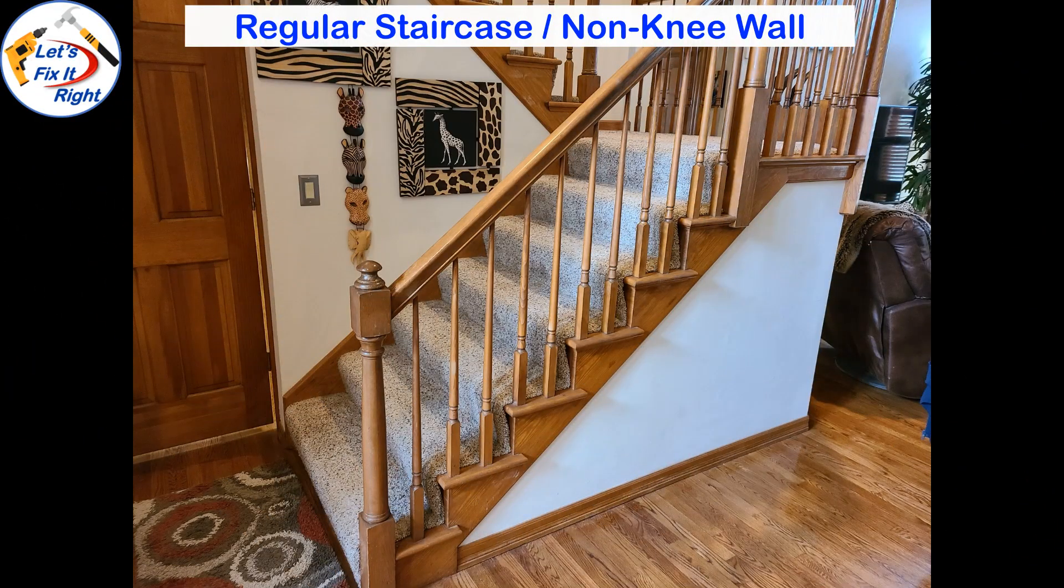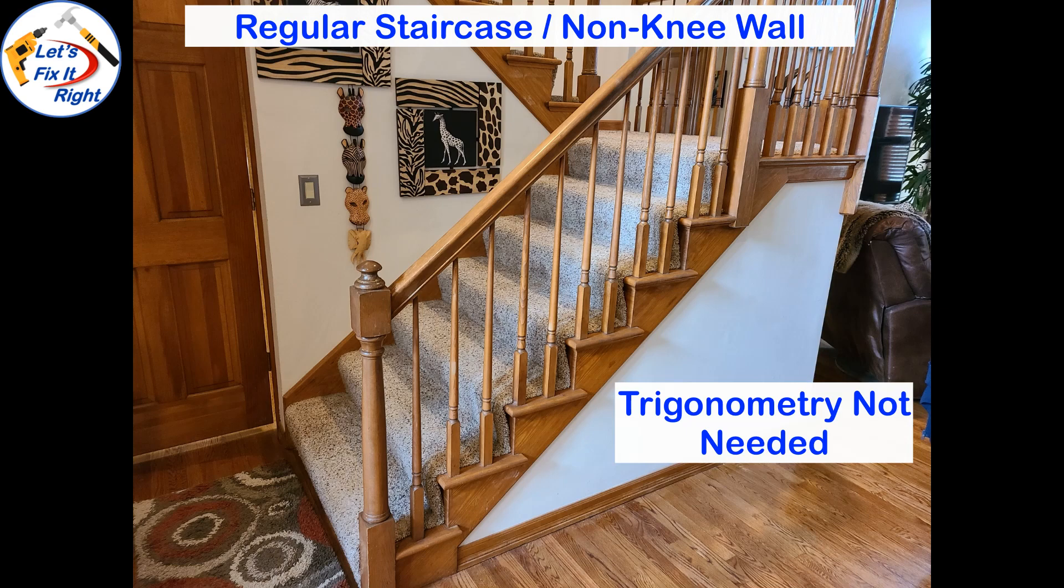If you have a regular staircase or non knee wall staircase similar to this upstairs staircase in my home this trig approach is not needed to make baluster distance calculations. You merely have to continue marking this horizontal baluster distance on the right to these exposed edges of the stair treads on the left.